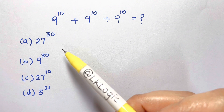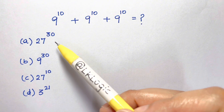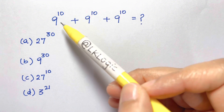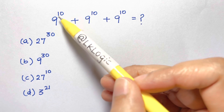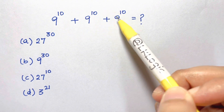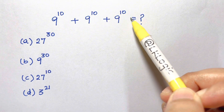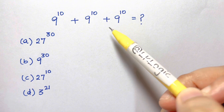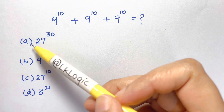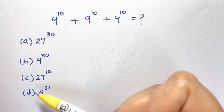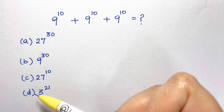Hi everyone, I'm back with another fun exponential problem for you all. You have to solve 9 to the power of 10 plus 9 to the power of 10 plus 9 to the power of 10 equals what? You have to choose your answer between A, B, C, and D — the four options here.